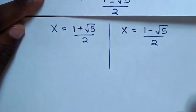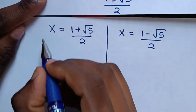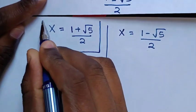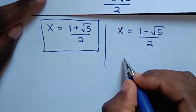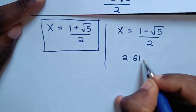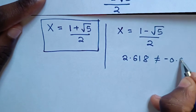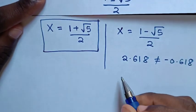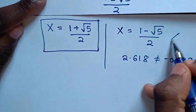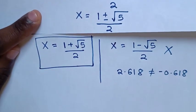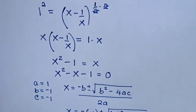Checking the first solution by substituting into the original equation confirms both sides are equal — this is the correct answer, the golden ratio. Checking the second solution gives left side 2.618, which does not equal the right side negative 0.618. Since the square root expression must be non-negative, the second solution is rejected.